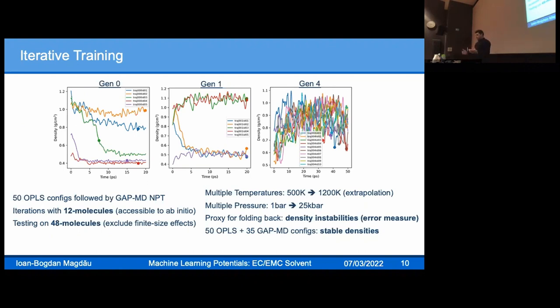We've done all these iterations with 12 molecules because they need to be accessible to ab initio calculations. But most testing is done on 48 molecules because small systems are often plagued by finite-size effects. We do this across multiple temperatures, 500 to 1200 Kelvin, to ensure when we predict we're in an interpolative regime. We do this with multiple pressures. For now, the proxy for folding things back in is just density stability. This is semi-manual as we're learning, but in the future we aim to have more automatic error measures and a clear protocol.